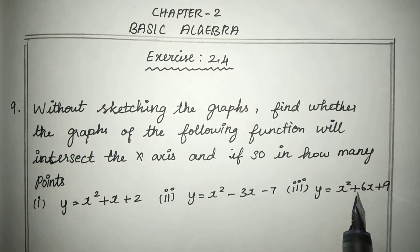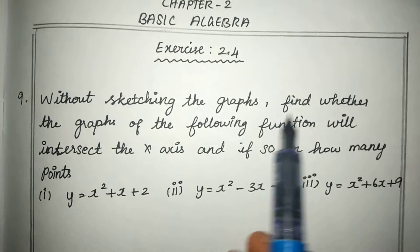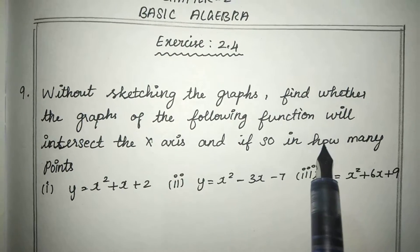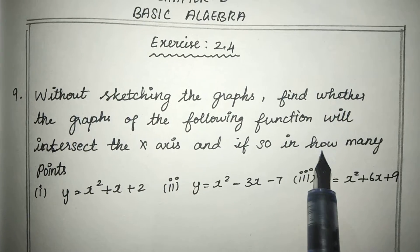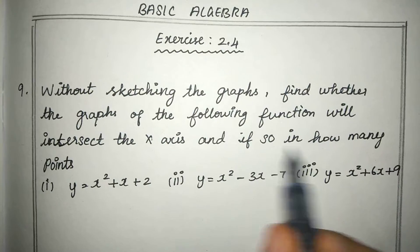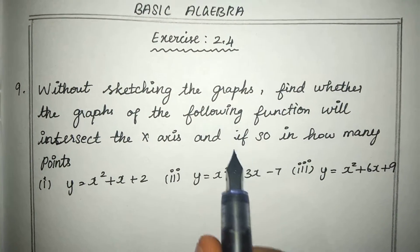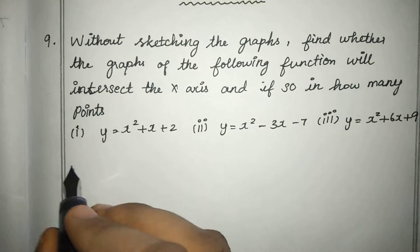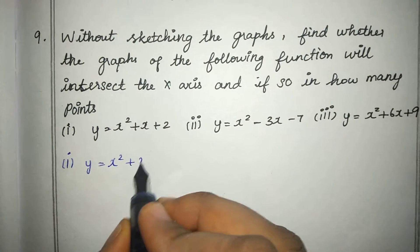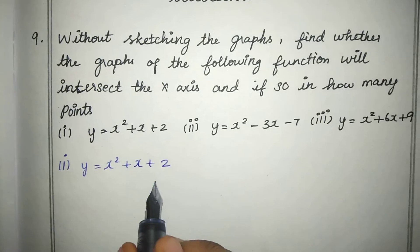There are three subdivisions. We need to determine whether the graph intersects the x-axis and how many points are intersecting on the x-axis. Now, first subdivision: y is equal to x-squared plus x plus 2.